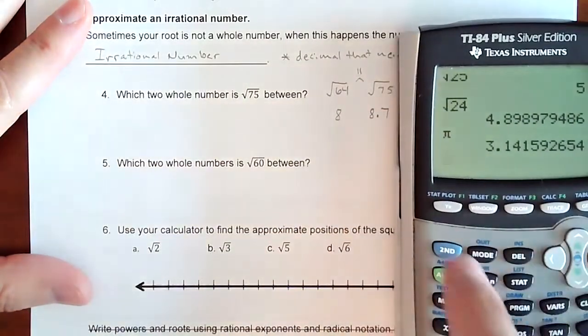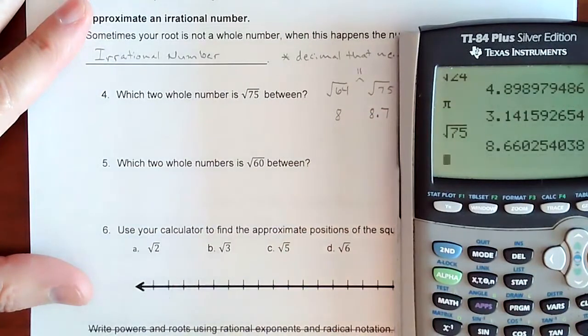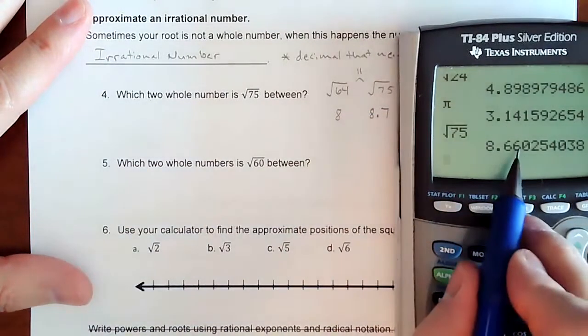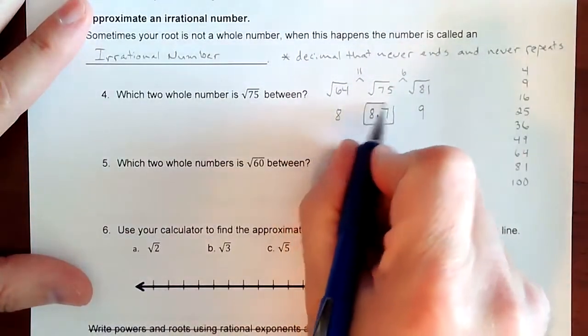So what is the actual value? The square root of 75 is 8.66, which would round to 8.7. Not too bad.